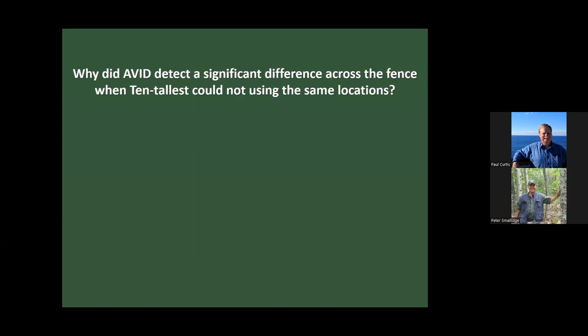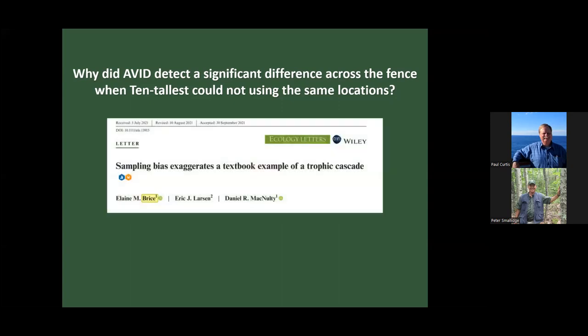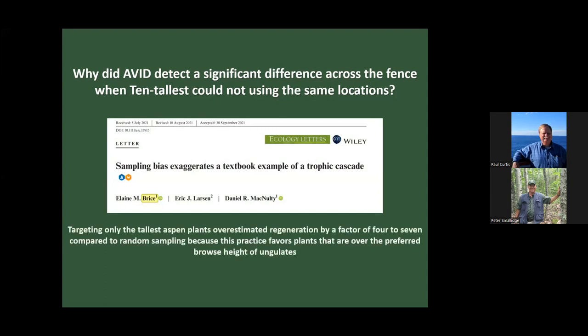Why did AVID detect significant differences across the fence in American beech growth when the 10 Tallest did not, using the exact same location? Based on a paper by Bryce, Quirin and Blossy suspect that targeting only the tallest plants likely overestimates regeneration and growth. When you sample only the tallest individuals, you're sampling the fastest-growing, most robust plants rather than a random sample — and so it tends not to pick up on changes in growth rates that you might expect.